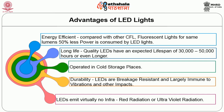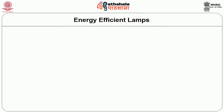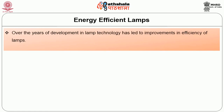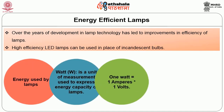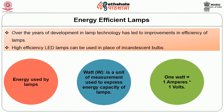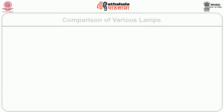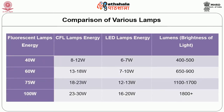Energy efficiency of lamps: over years of development, lamp technology has led to improvements in efficiency. High efficiency LED lamps can be used in place of incandescent tubes. Energy used by lamps is given in watts, where 1 watt equals 1 ampere multiplied by 1 volt. A comparison of various lamp types in terms of watts is given in a table. With this comparison, LED lamps consume less energy and provide more brightness in lumens.